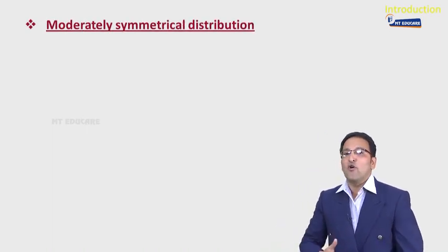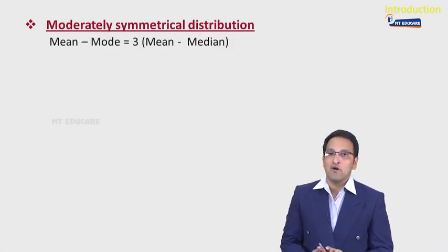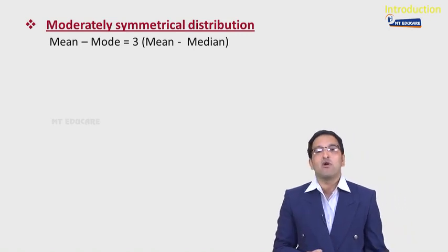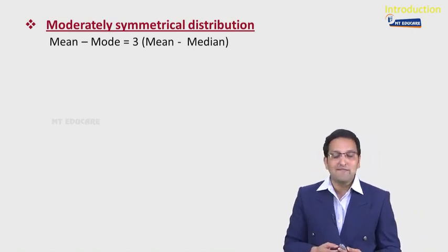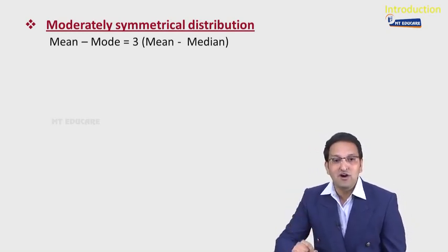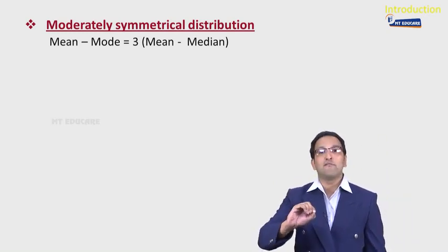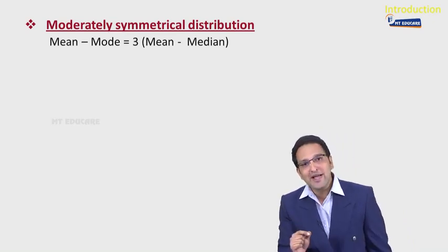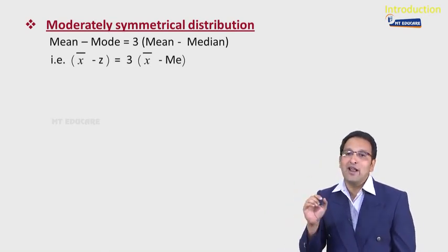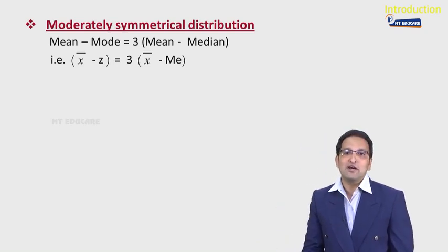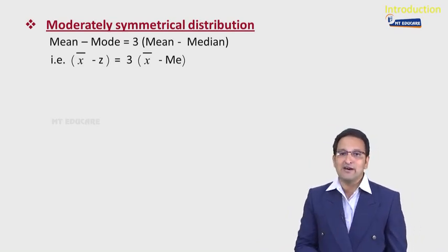Now, let's check what is meant by moderately symmetrical distribution. In this case, our formula is: mean minus mode = 3 × (mean minus median). In symmetrical distribution, the curve is bell-shaped. This important formula is: mean minus mode = 3 × (mean minus median). In symbols: x̄ − Z = 3(x̄ − median), where Z is the symbol for mode and x̄ is the mean.